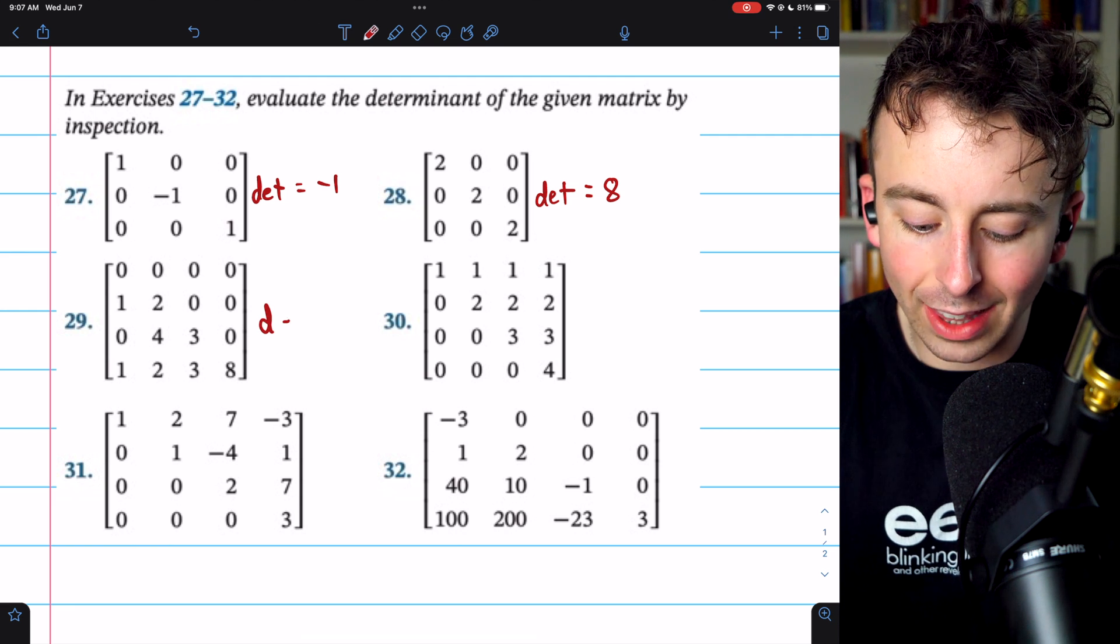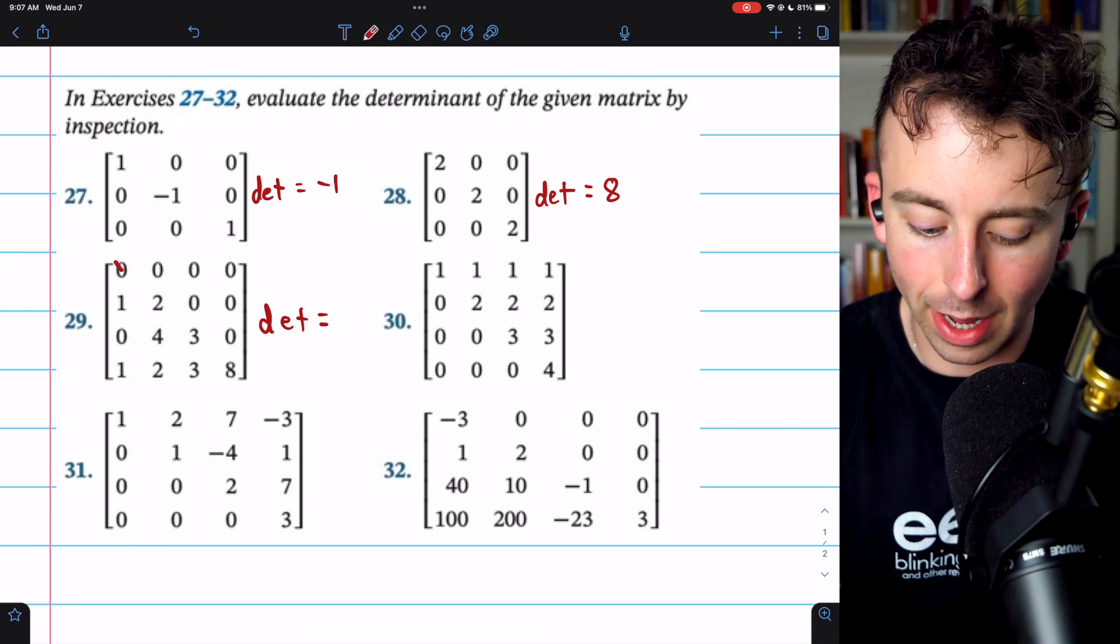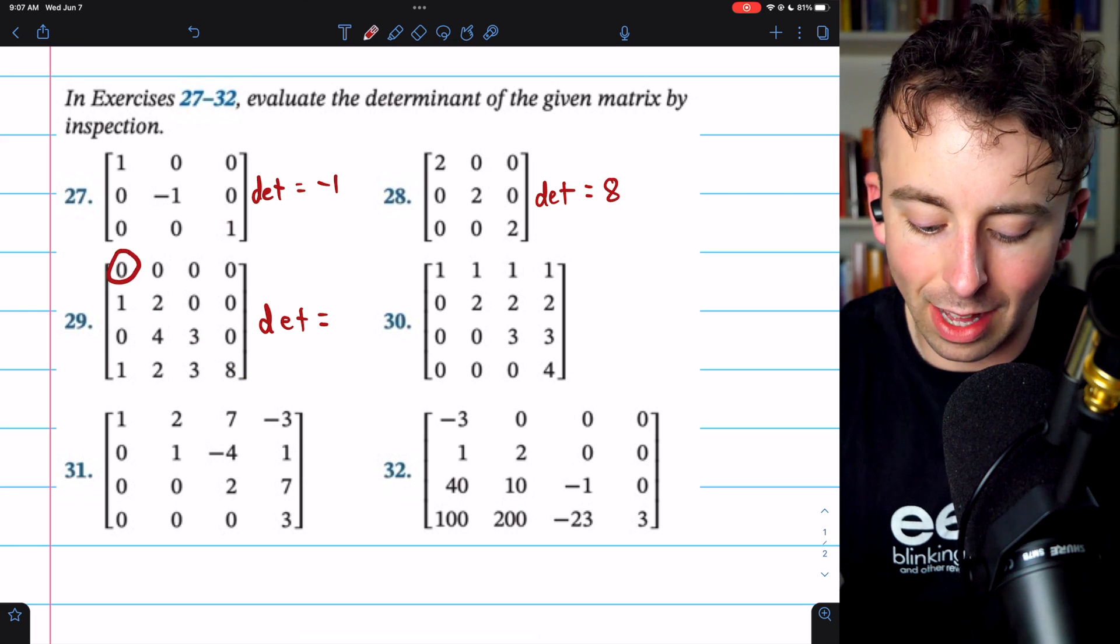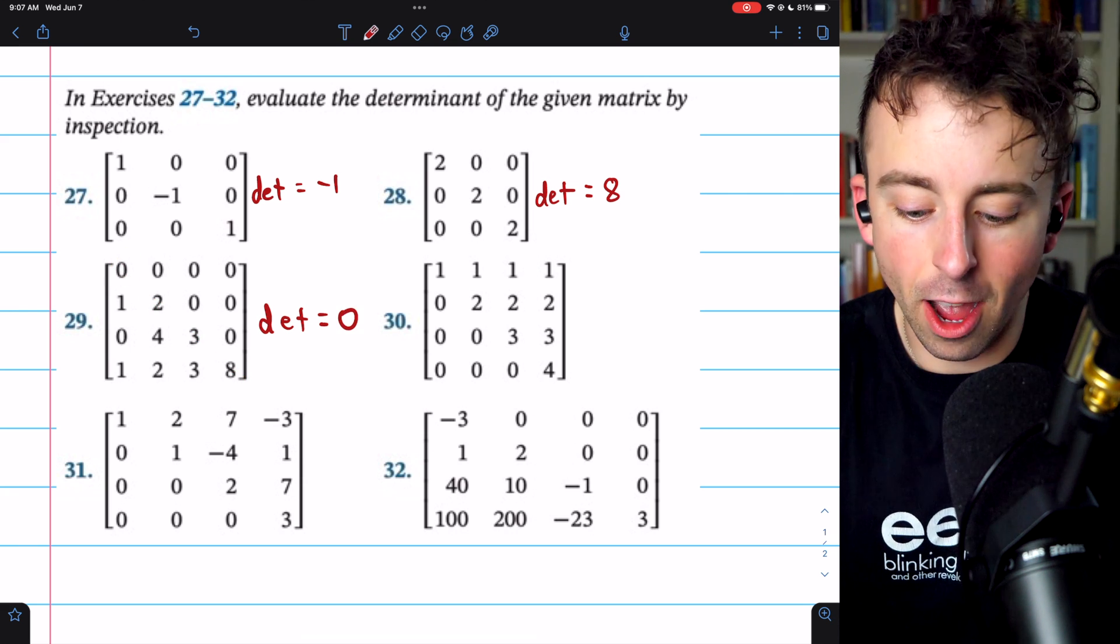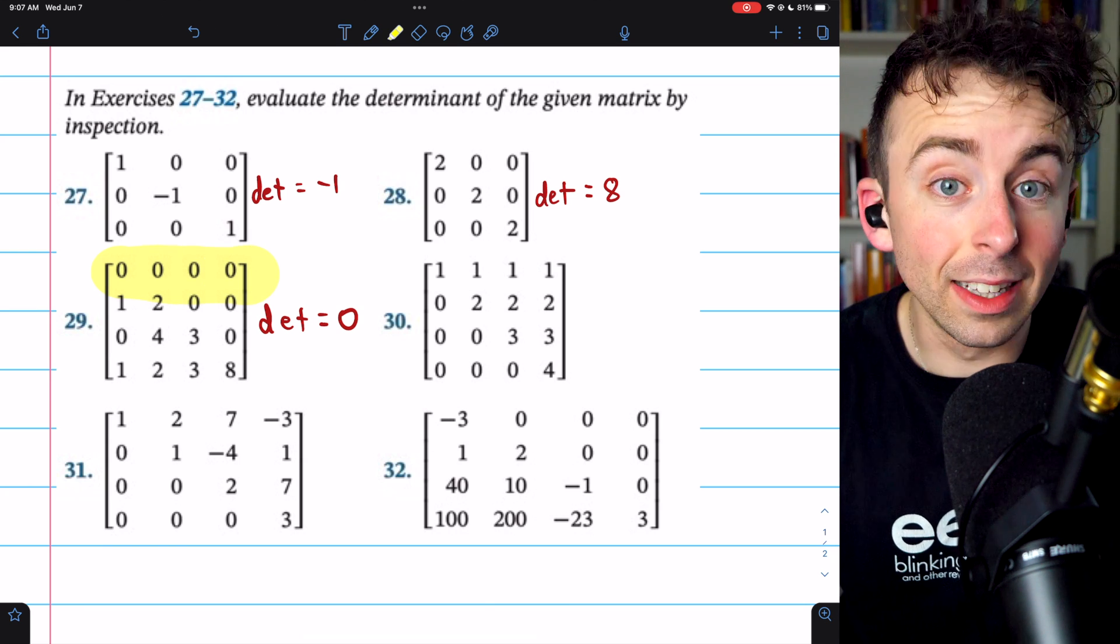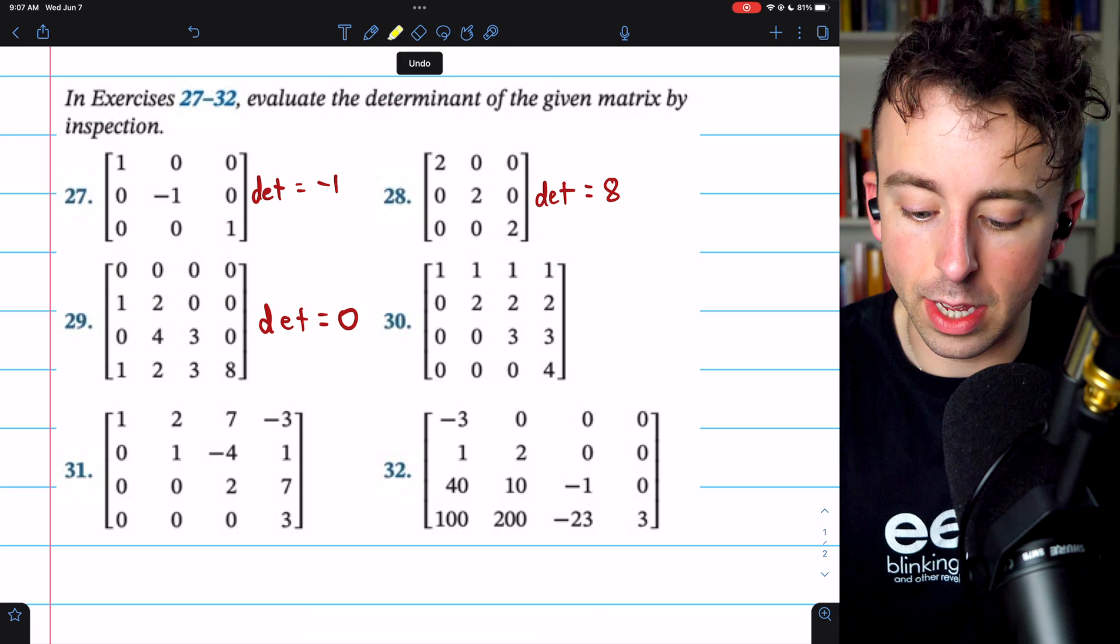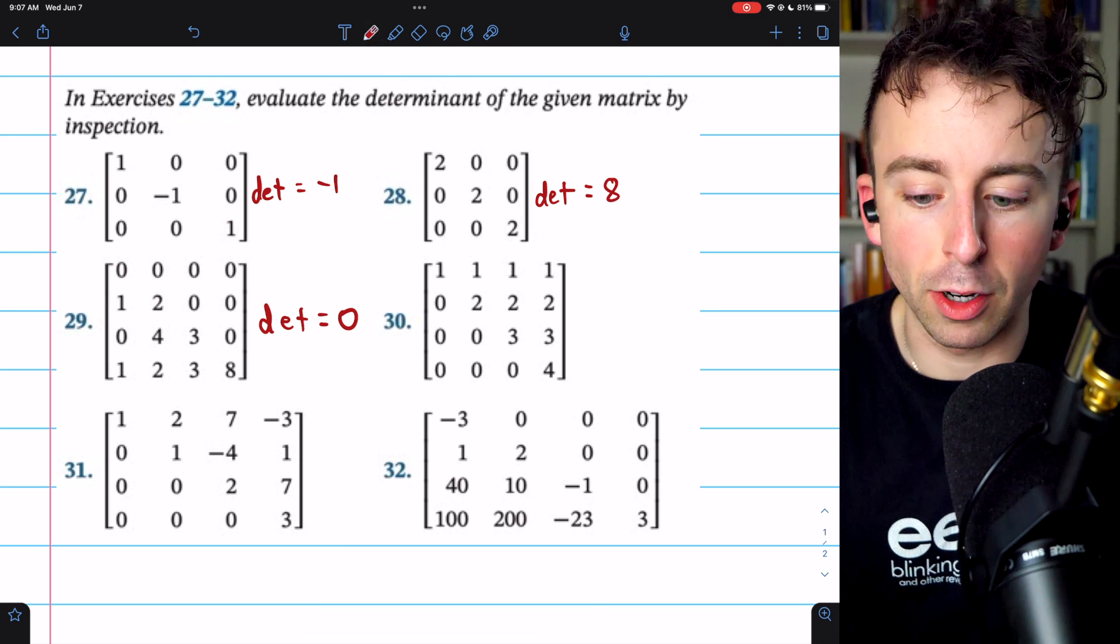29, we have a lower triangular matrix. Its determinant can be found by just multiplying across the main diagonal. In this case, you see that's going to be 0. Anytime that a matrix has a row or a column of all 0s, its determinant will be 0, which is an immediate consequence of the cofactor expansion definition of the determinant.